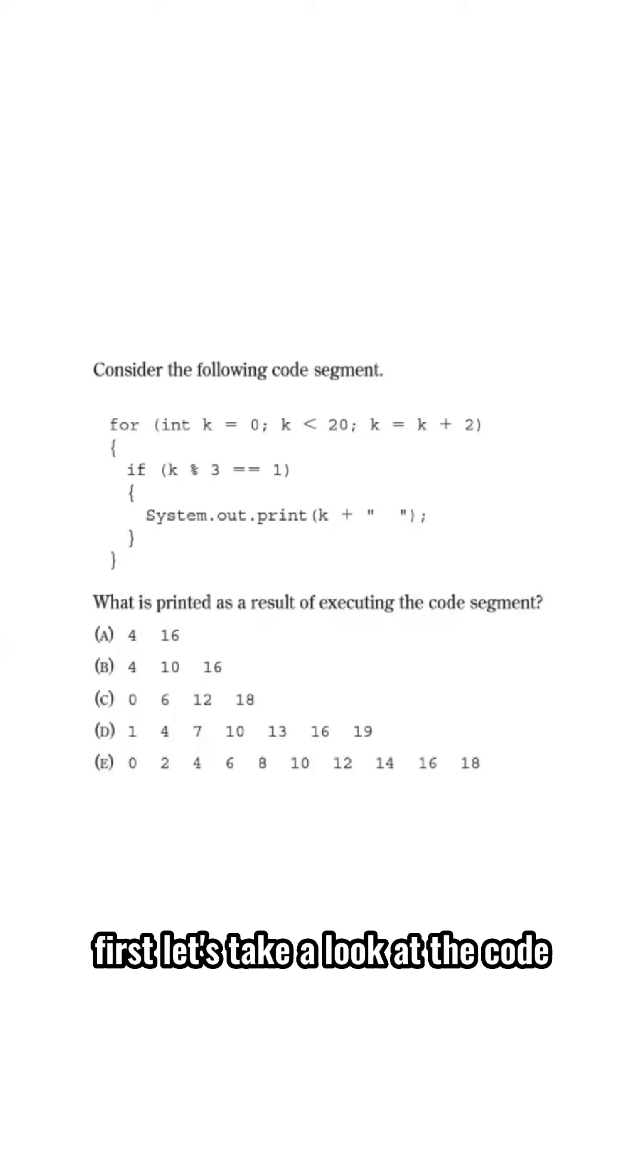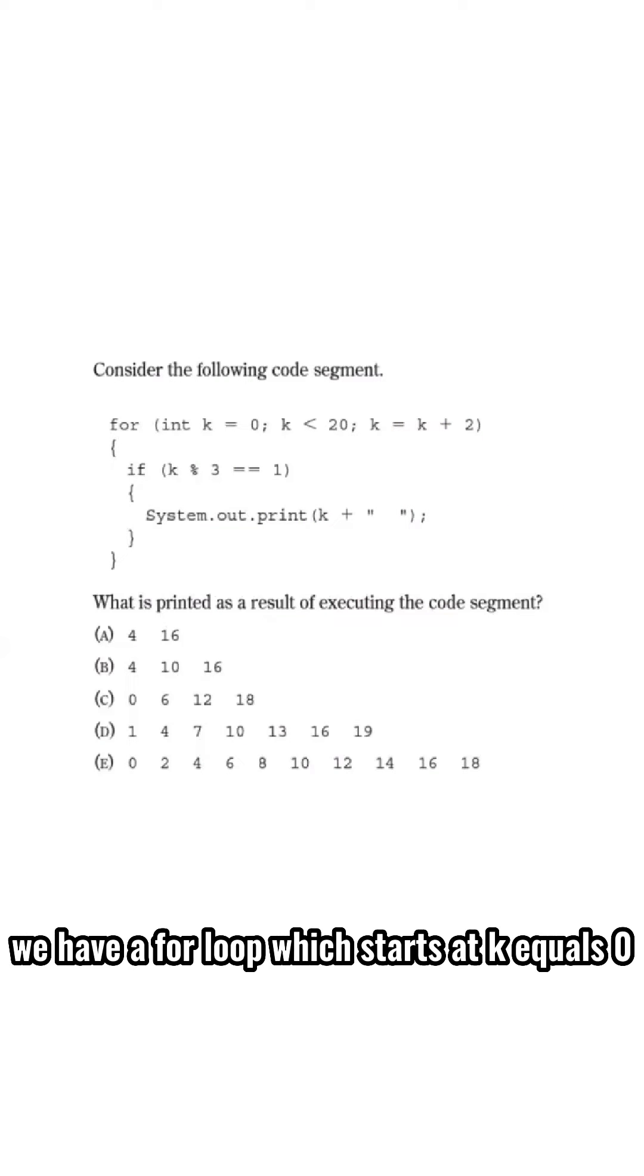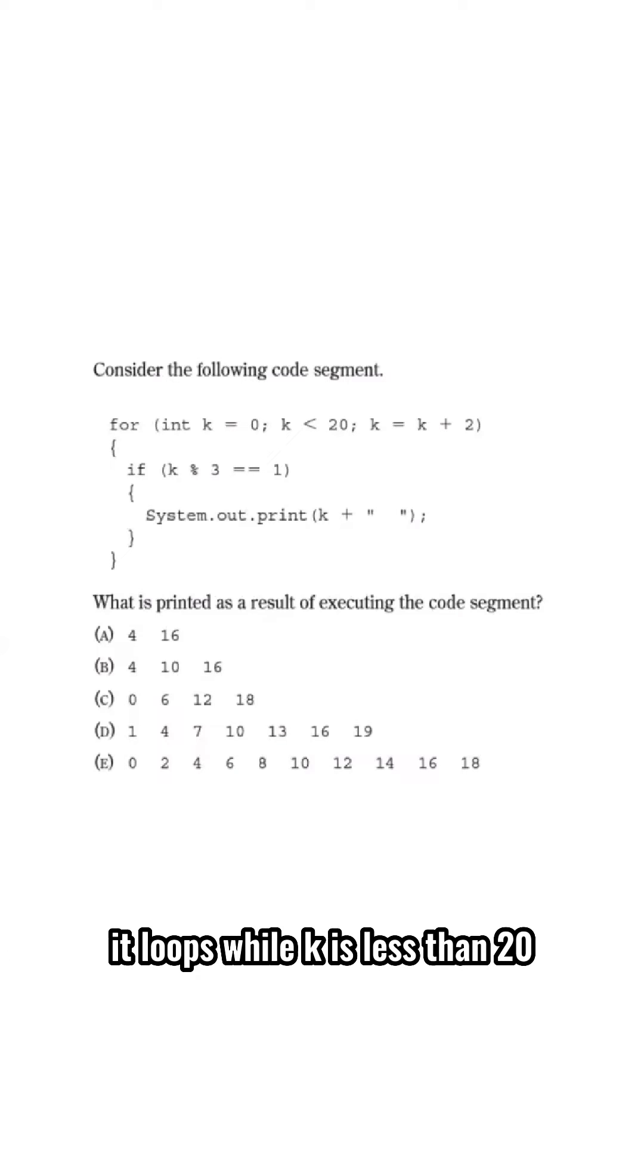First, let's take a look at the code. We have a for loop, which starts at k equals 0. It loops while k is less than 20, and k is incremented by 2 each iteration.